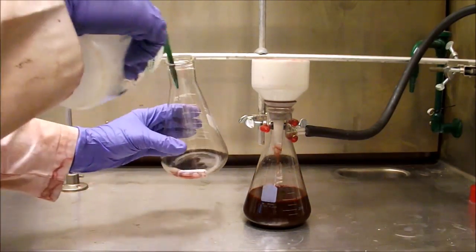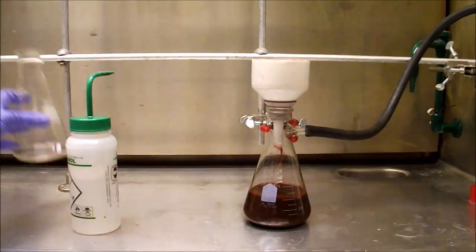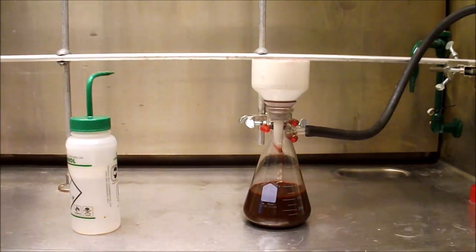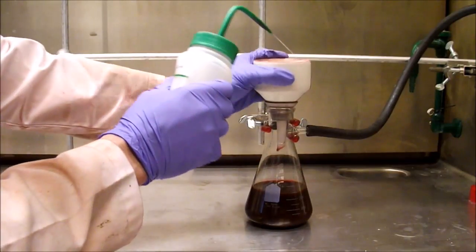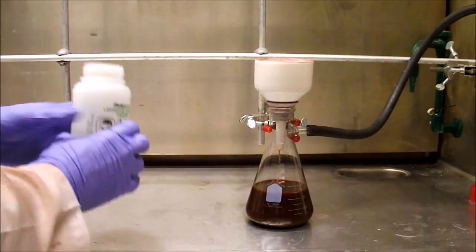While the solution is quite dark, this only represents a small amount of PDI and is a relatively small loss of product. A small amount of methanol is used to rinse the Erlenmeyer and the sides of the Buchner funnel.